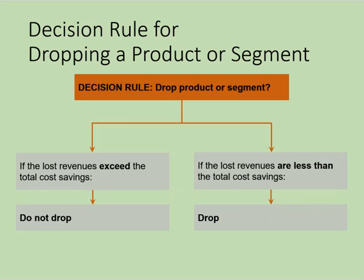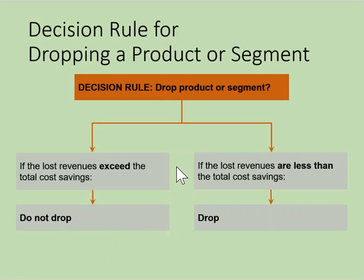To summarize, when considering whether to drop a segment, the decision rule is as follows: if the lost revenues exceed the total cost savings, then we don't drop the product or segment. If the lost revenues are less than the total cost savings, then we do drop it.